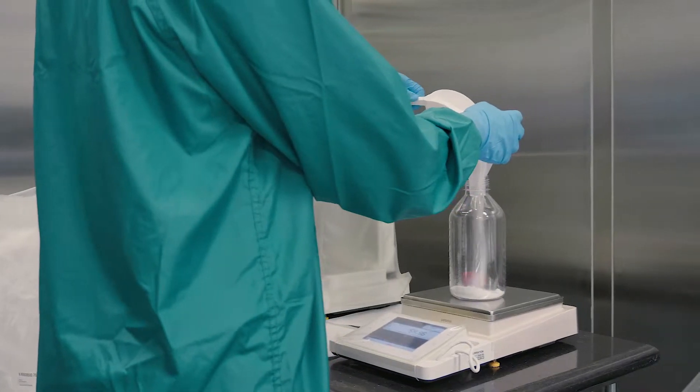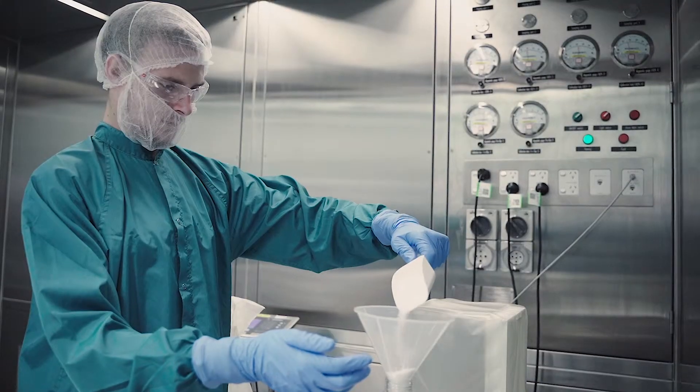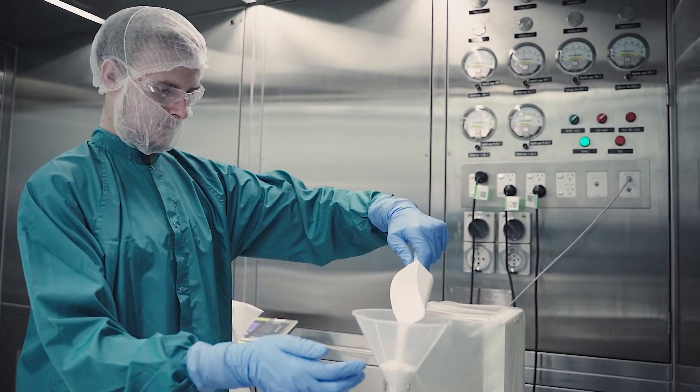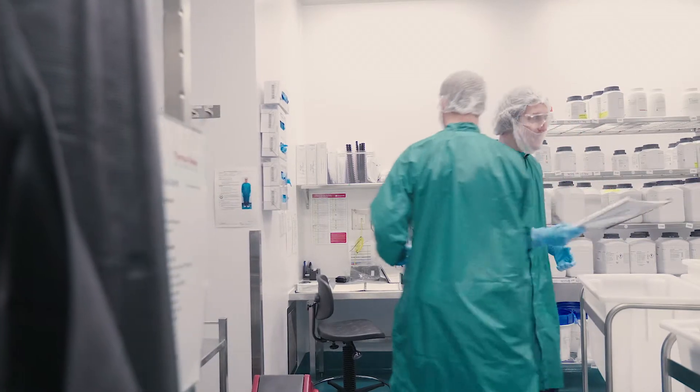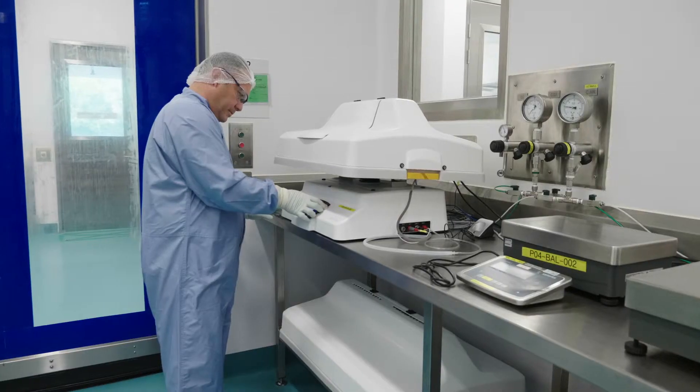Our upstream area consists of four dedicated pre-culture rooms where we do the vial thaw and the initial stages of the pre-culture—shake flask and an incubator—expanding those cells up until they're ready to be passaged up to a wave reactor.